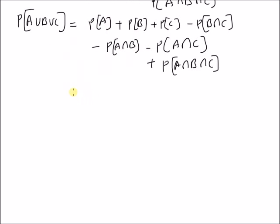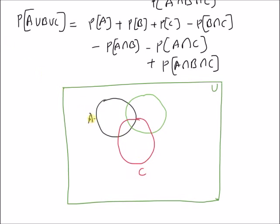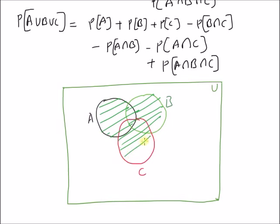This formula can also be illustrated using the following Venn diagram. Let us assume this is the universal set U and we have three events A, B, and C. We want to find the probability of the union of these three events, which is the probability of the entire shared region, equal to probability of A union B union C. To do that, we add the probabilities of the three individual events: probability of A, probability of B, and probability of C.